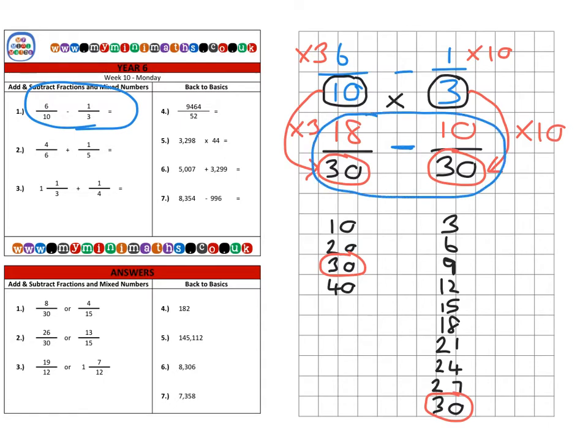So one lot of 10, of course, is 10. And I'm going to subtract, so 18 thirtieths subtract 10 thirtieths gives me an answer of 8 over 30. You could also write this in its simplest form as 4 over 15. Either answer is acceptable.